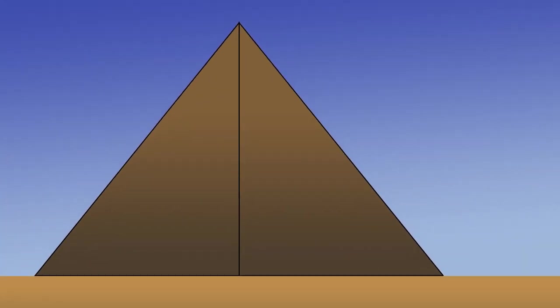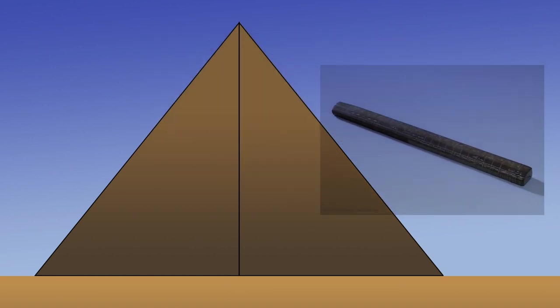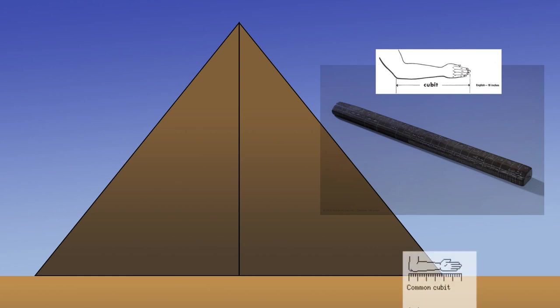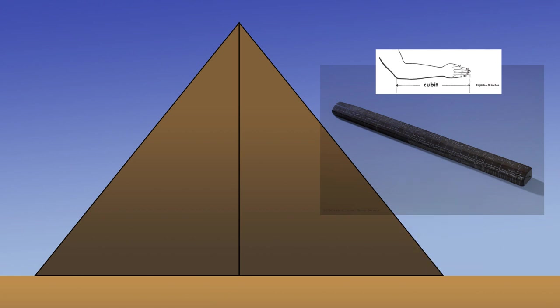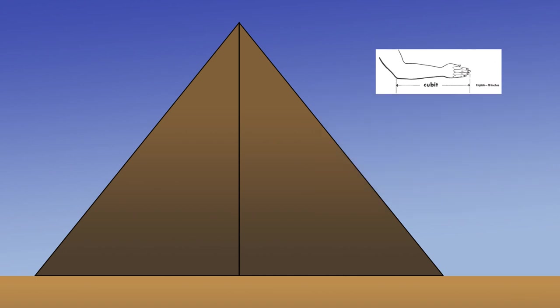When we start looking at the measurements of the pyramid, it is important first to know that the Egyptians did not use meters or feet or inches, but instead they had a basic unit of length called the royal cubit. There are some variations to the actual length of this unit, but the pyramid itself, in my opinion, defines it.